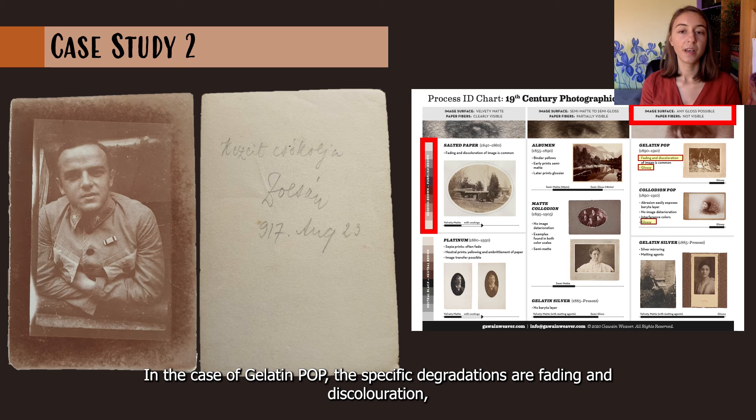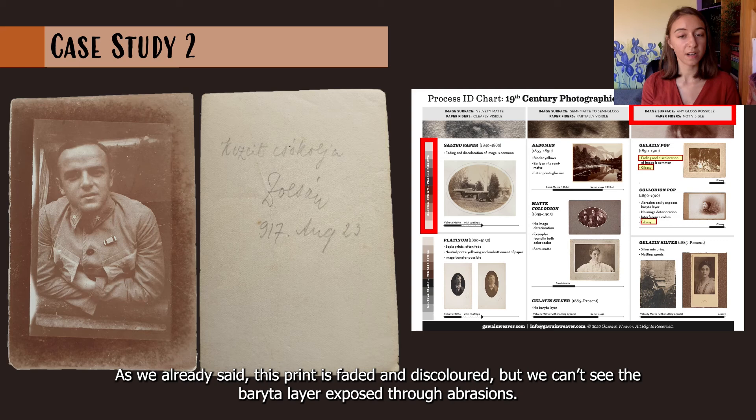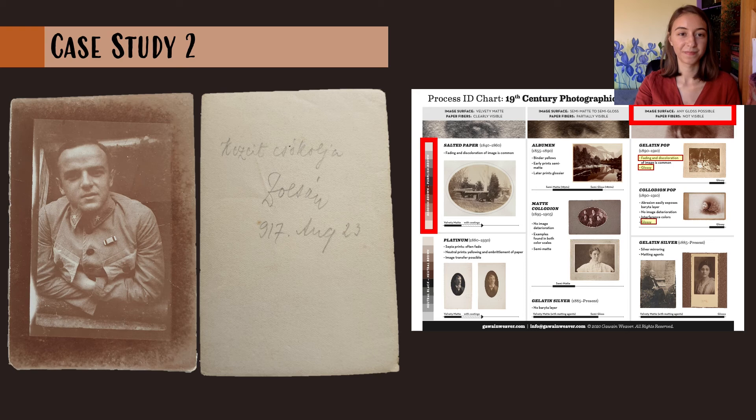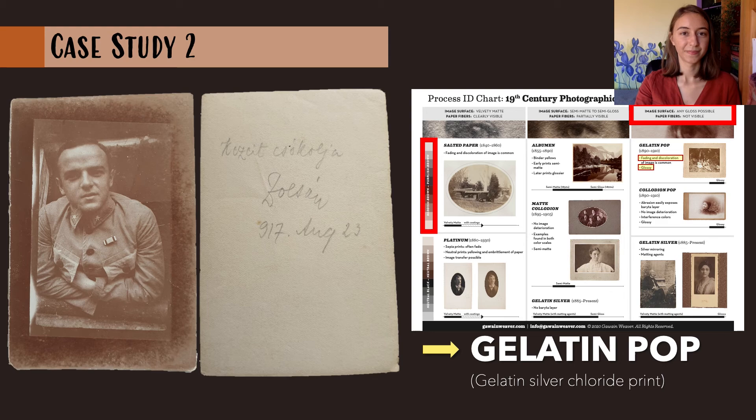The one thing that differentiates them is how they deteriorate over time. In the case of Gelatin POP, the specific degradations are fading and discoloration. In the case of Collodion POP, it is abrasion that easily exposes the baryta layer. As we already said, this print is faded and discolored, but we cannot see the baryta layer exposed through abrasion. So the only possibility that remains is Gelatin POP — in other words, a Gelatin Silver Chloride print.